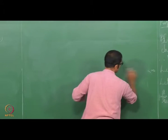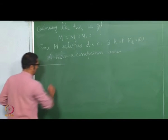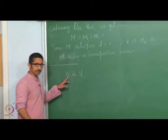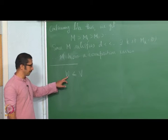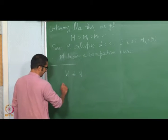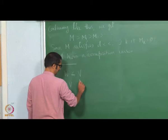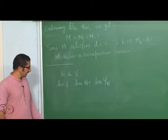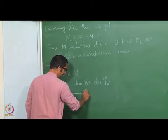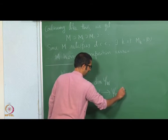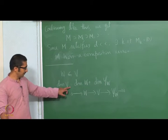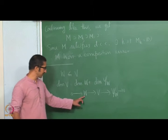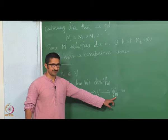If I have a subspace W of V and it is a proper subspace, then dimension of V is strictly bigger than dimension of W. Moreover, by the rank-nullity theorem, dimension of V equals dimension of W plus dimension of V mod W. What the rank-nullity theorem says is that dimension is additive on short exact sequences.